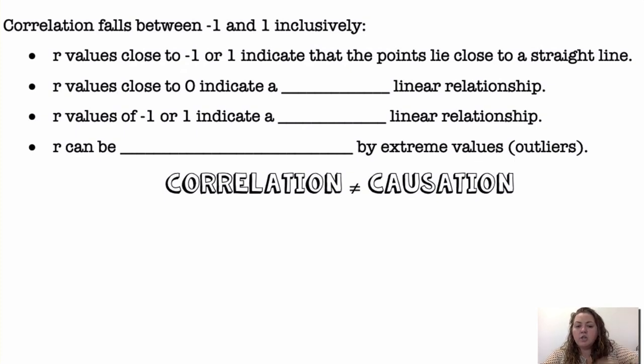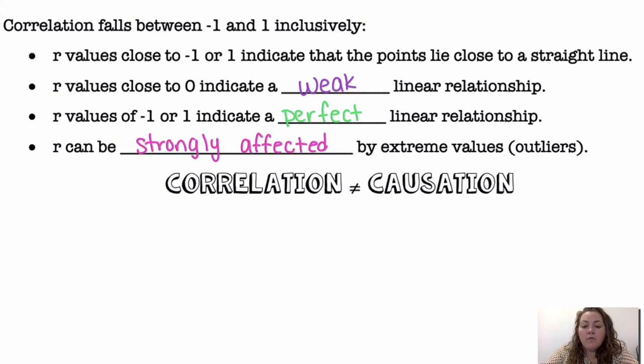R values close to 0 indicate a weak linear relationship. R values of negative 1 or 1 indicate a perfect linear relationship. So, if it is equal to 1 or negative 1. And R can be strongly affected by extreme values or outliers.